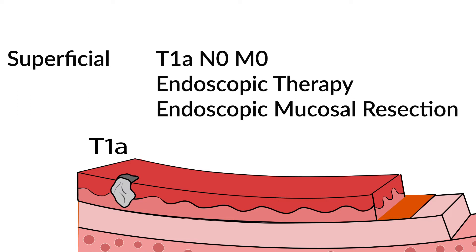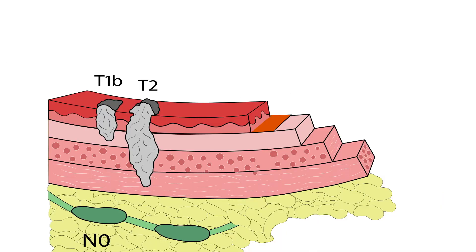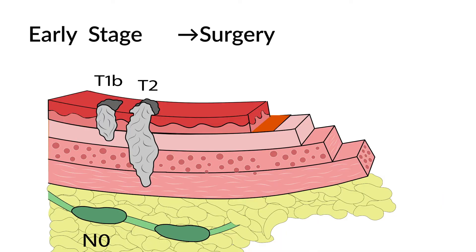The tumor is T1A and just invades the top layer. The lymph nodes are N0, which means there are no signs of spread to the lymph nodes. This drawing shows an early-stage tumor which might be a candidate for primary surgery — either T1B or T2. These tumors invade too far into the wall of the esophagus to be treated with just endoscopic therapy, and the lymph nodes are N0.